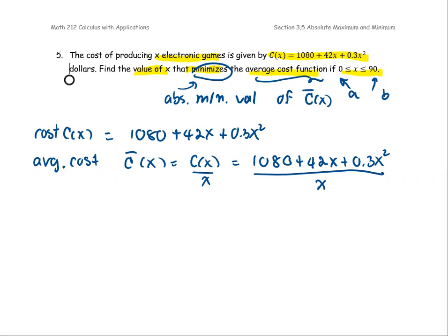To find the absolute max and absolute min, we're going to find the critical values as the first step. Then compute the function values at the two endpoints and at the critical value. The last step is to compare the numbers: pick the largest as the absolute max and the lowest as the absolute min.